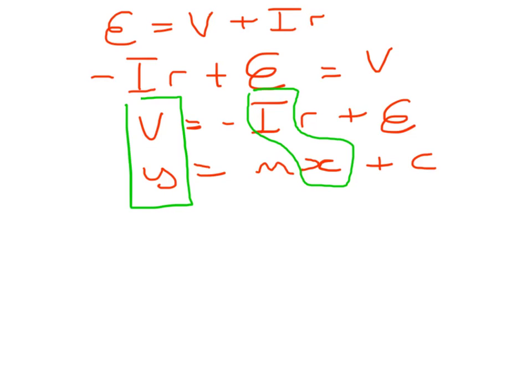If I plot then voltage on the y-axis against current on the x-axis, then I've got something quite interesting. Because what I've got now is a straight line graph where the gradient is negative. So I've got a little negative there. So M stands for gradient. So the gradient will be minus R. And of course, R was the internal resistance. So the gradient is going to give me the internal resistance. And the intercept, C, is going to give me the EMF.